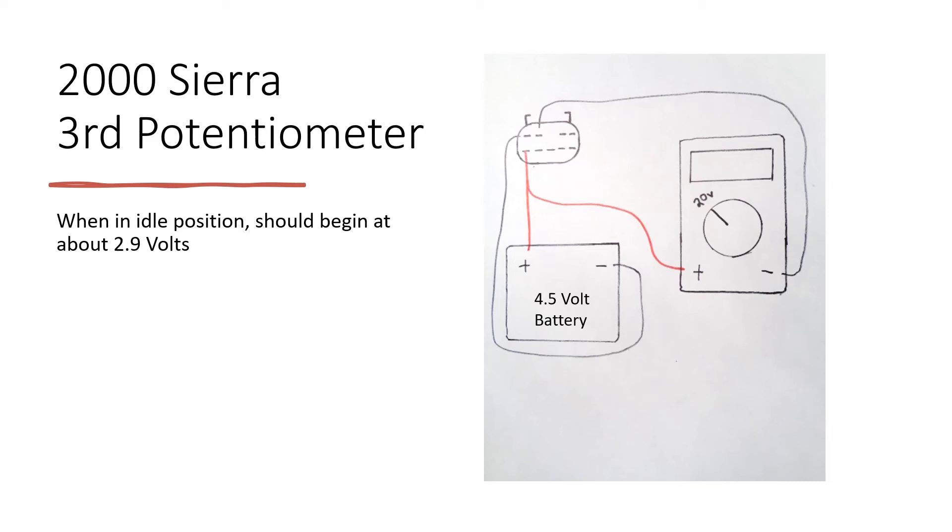It should be reading about 2.9 volts at the idle position before you start twisting. And it should stop at about 0.6 volts at the end position. Remember, check for spikes and glitches during these tests.